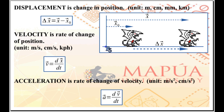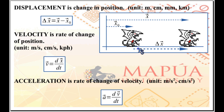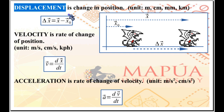We have an object on the x-axis. With respect to the x-axis, the object has a position relative to the origin. At x equals zero, the object has an initial position x₀. If the object is moving along the x-axis, its position changes from initial position x₀ to final position x. The object undergoes a change in position, delta x, which is referred to as the displacement of the object. Displacement is change in position: delta x equals x minus x₀.